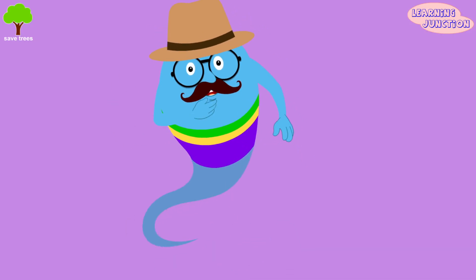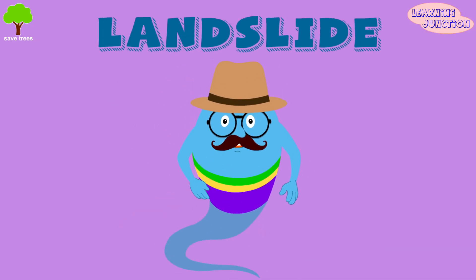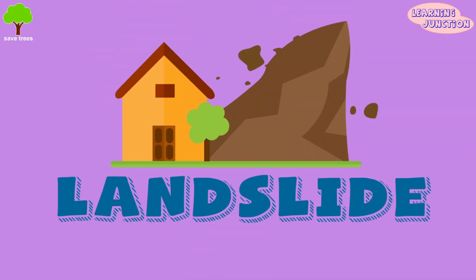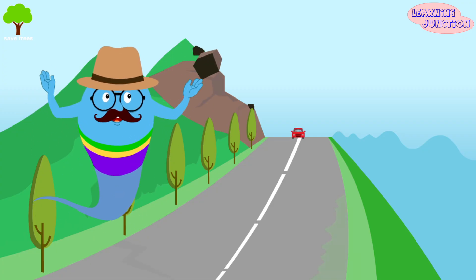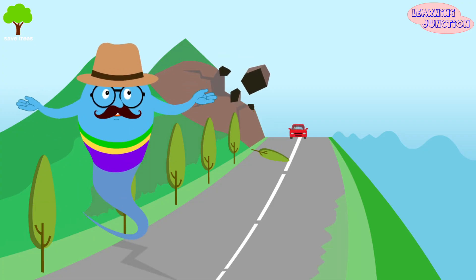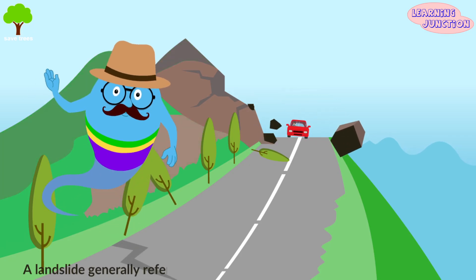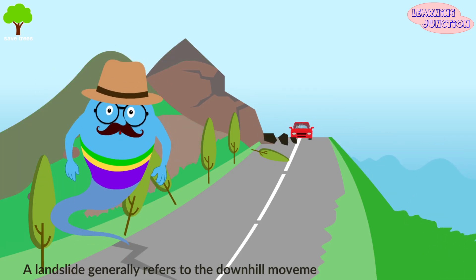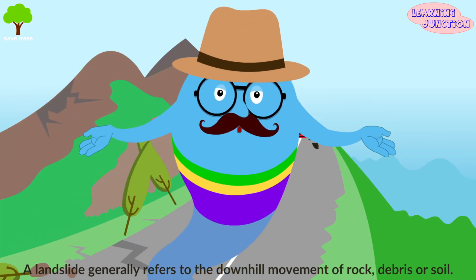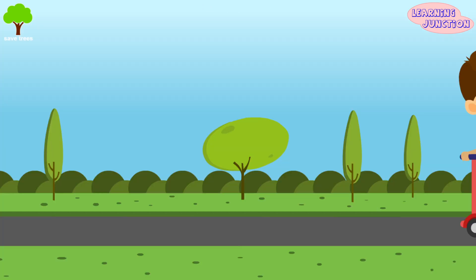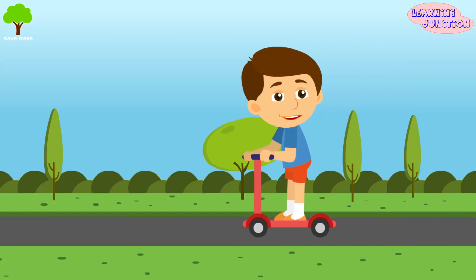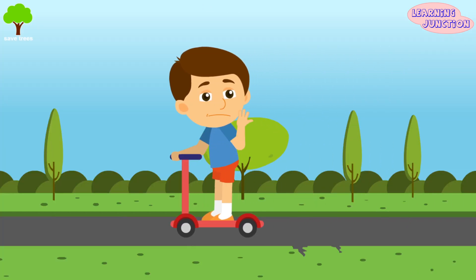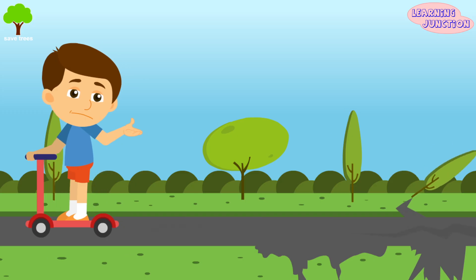Hello friends, today we'll learn about landslides. Landslides are one of the most fatal natural wonders on Earth. A landslide generally refers to the downhill movement of rock, debris, or soil. Landslides can occur on every type of surface, whether sandy or rocky.